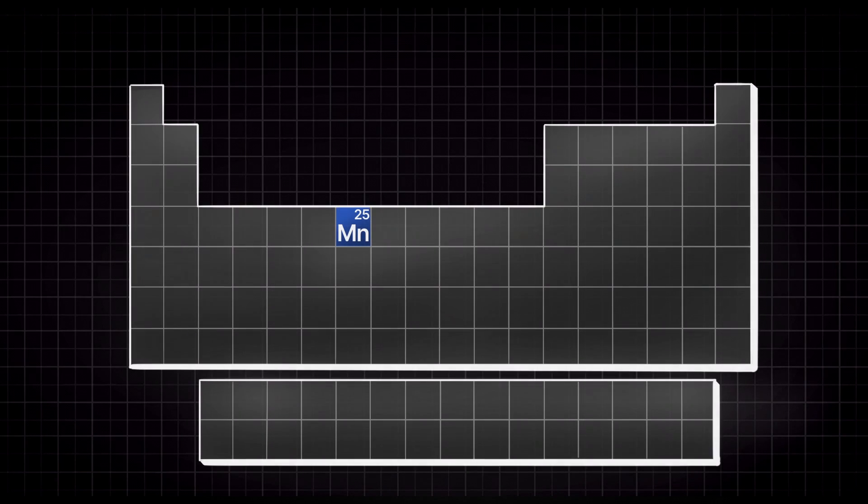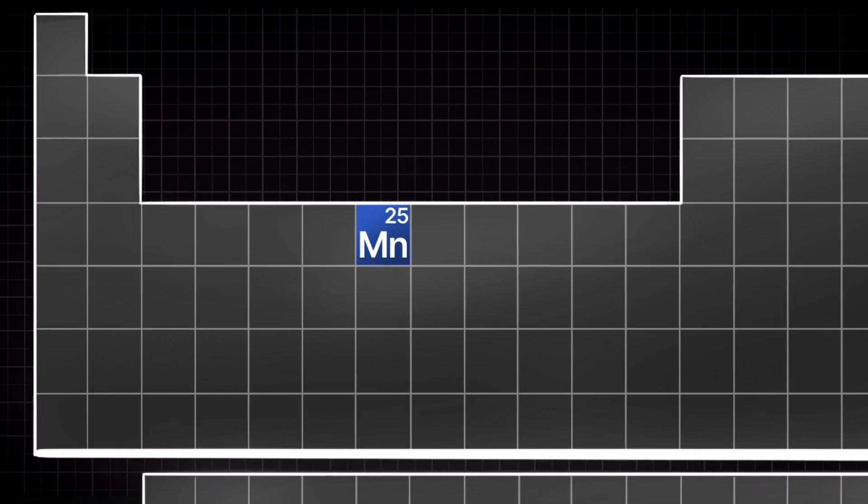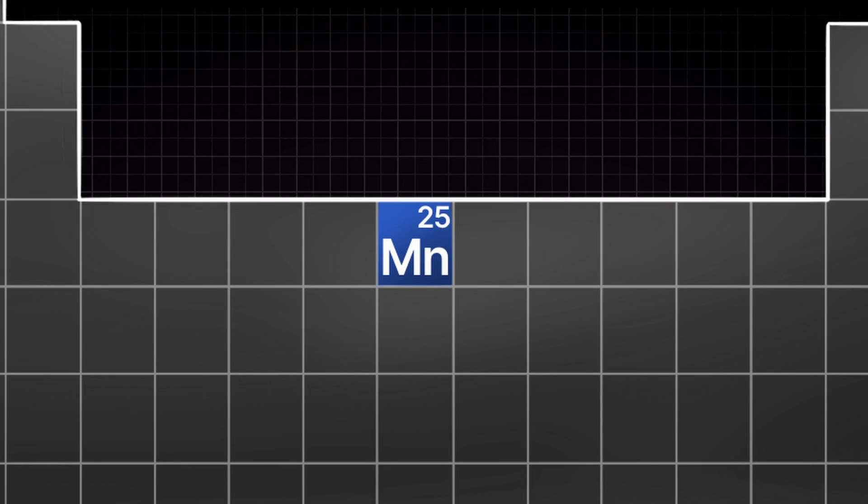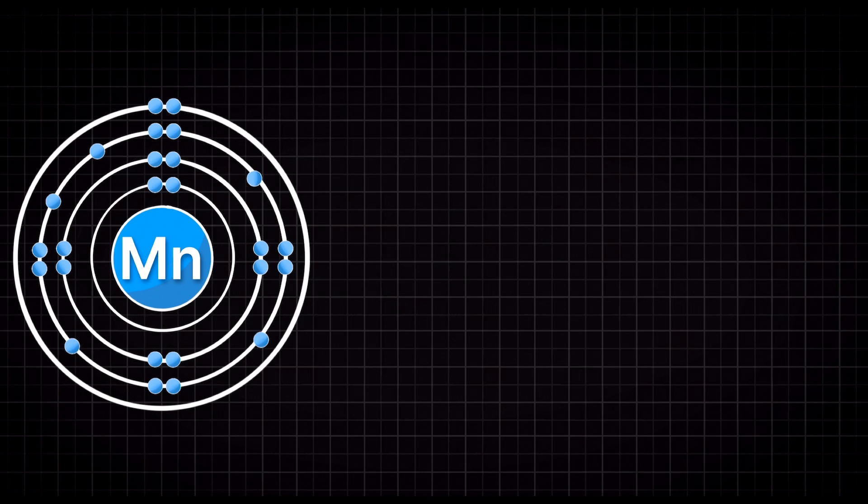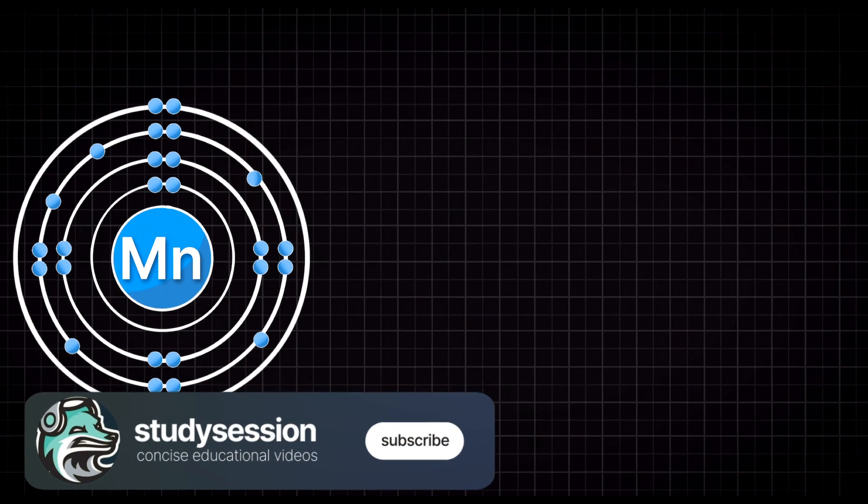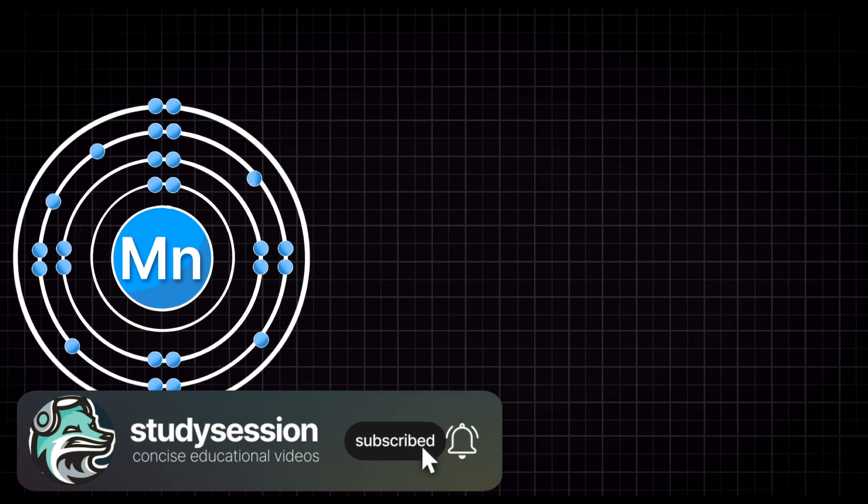To solve this, the first thing we need to do is look at our periodic table and see how many electrons a manganese atom actually has in its ground or unexcited state. Looking this up, we can see that manganese is number 25 on the periodic table, meaning that in a neutral state, no positive or negative charge, our manganese atom will have 25 protons in its nucleus and thus 25 electrons surrounding that nucleus.